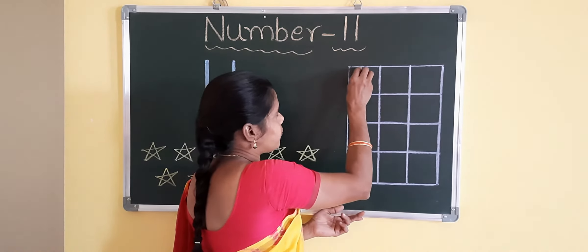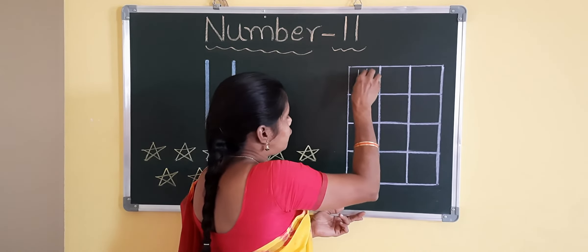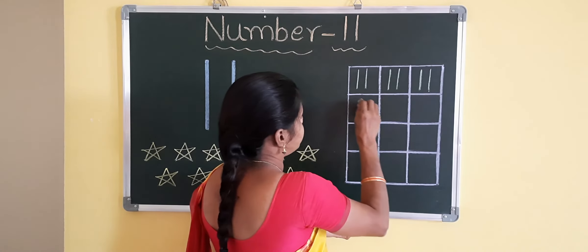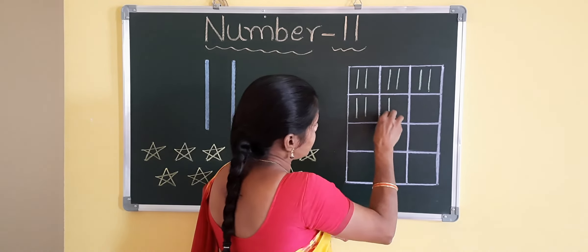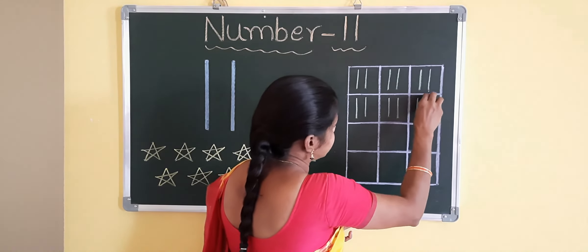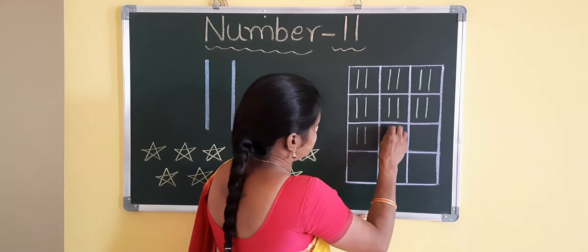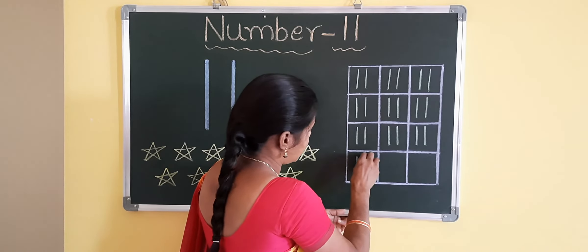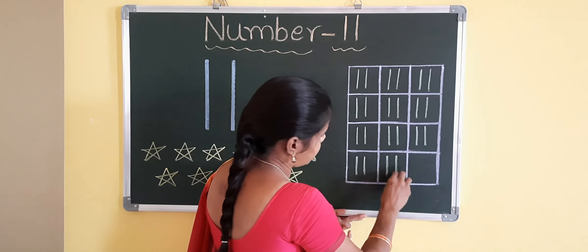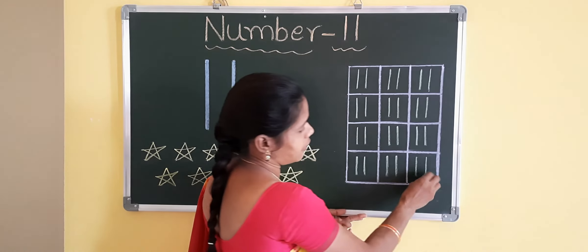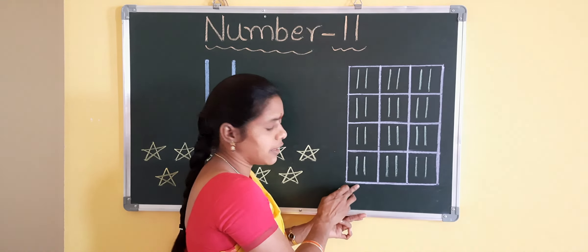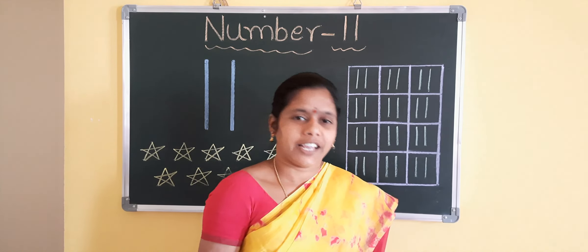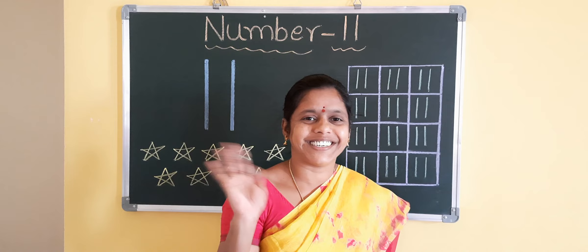Now write in the boxes. 11, 11, 11, 11. You should say and write. Write 11 in your boxes. Now pick up little number 11. In the same way you should write in your notebook. But before that you should practice on the slate. Bye children!